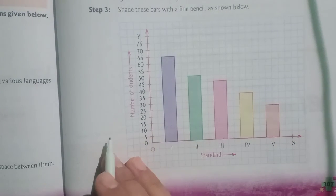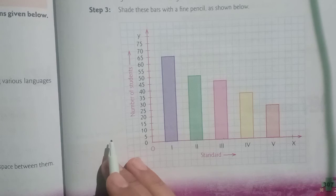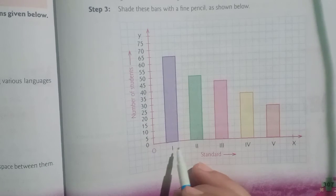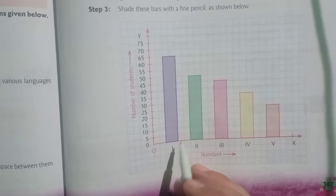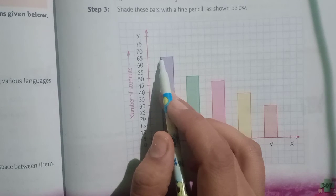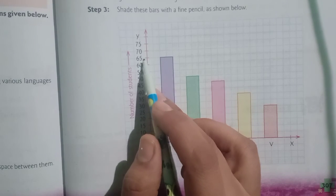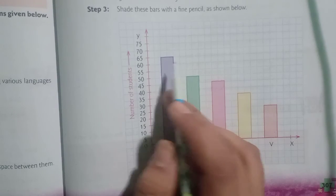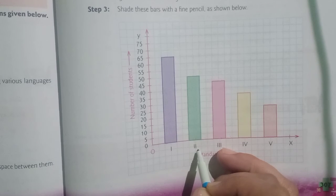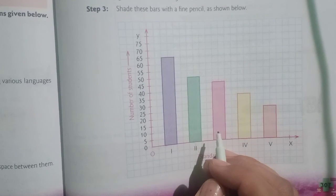So here on the X-axis we have taken the standard, and on the Y-axis we have taken number of students. Number of students in standard first is 65, so you can see over here the bar is reaching till 65.